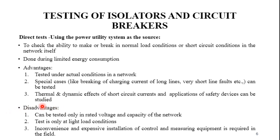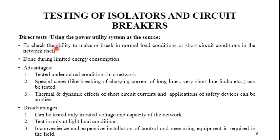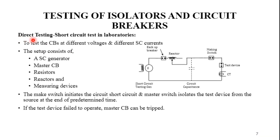Limitations of the direct field test include: testing can only be done at the rated voltage and capacity of the network; the test is done only at light load conditions; and extra inconvenience and expenses in the installation of control and measuring equipment are required to conduct the field test.